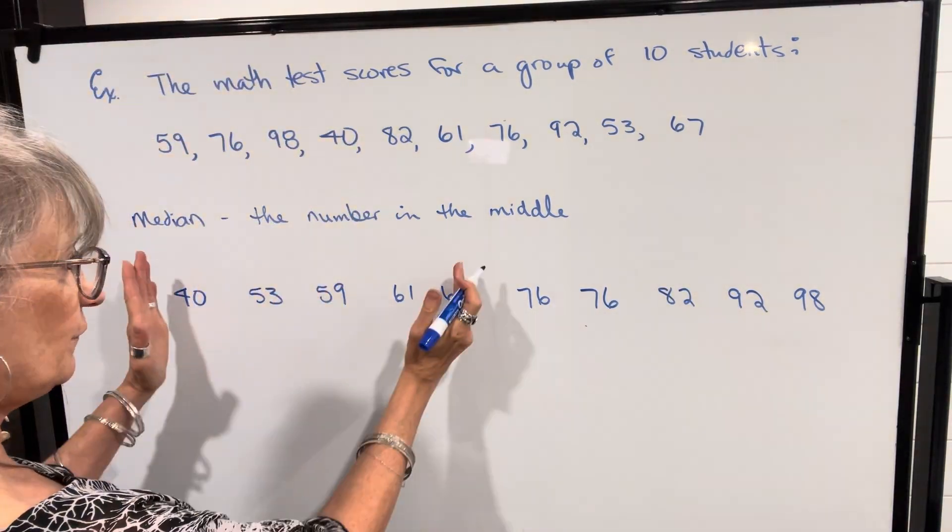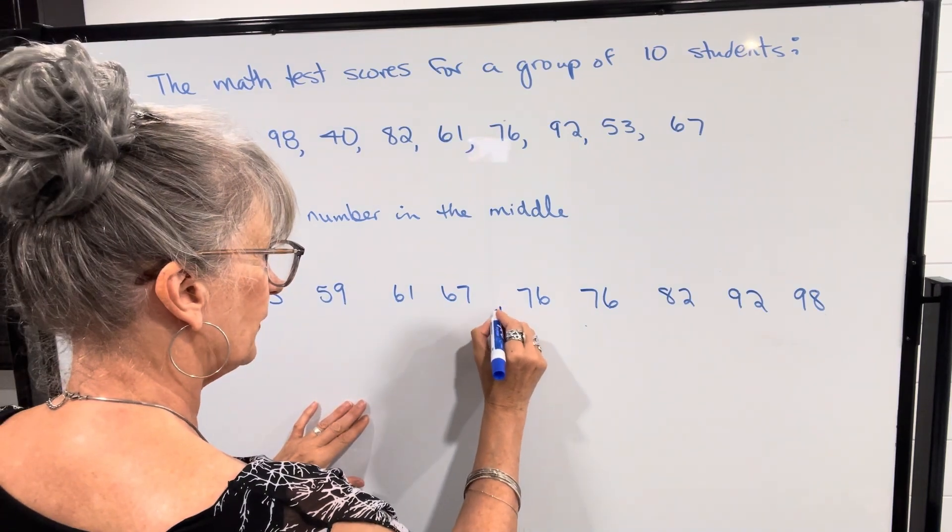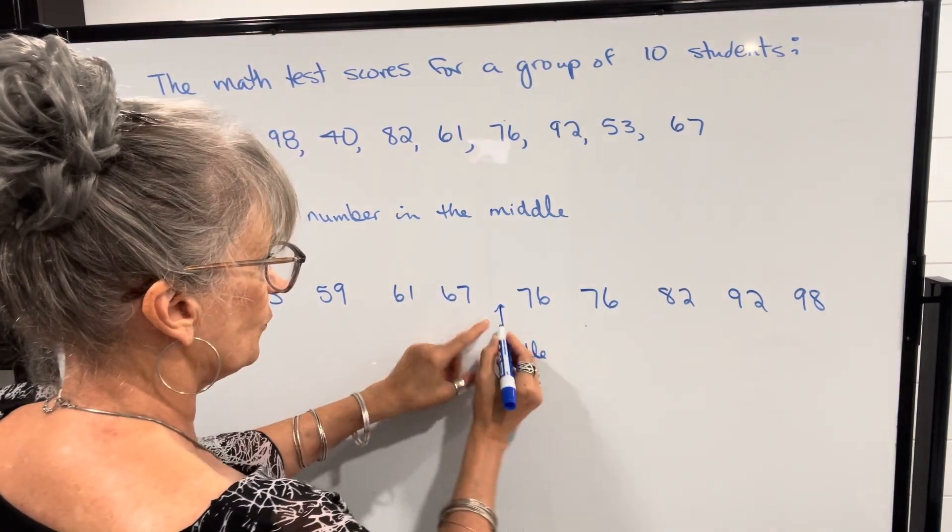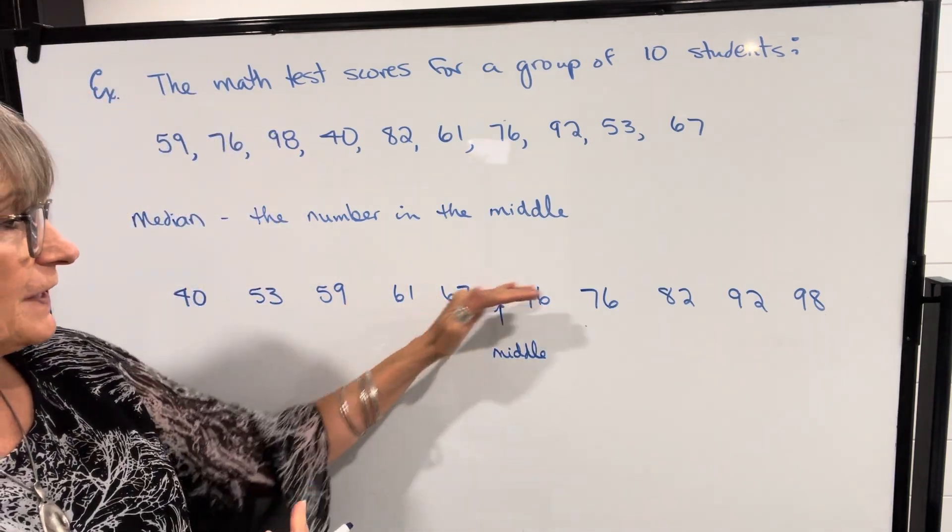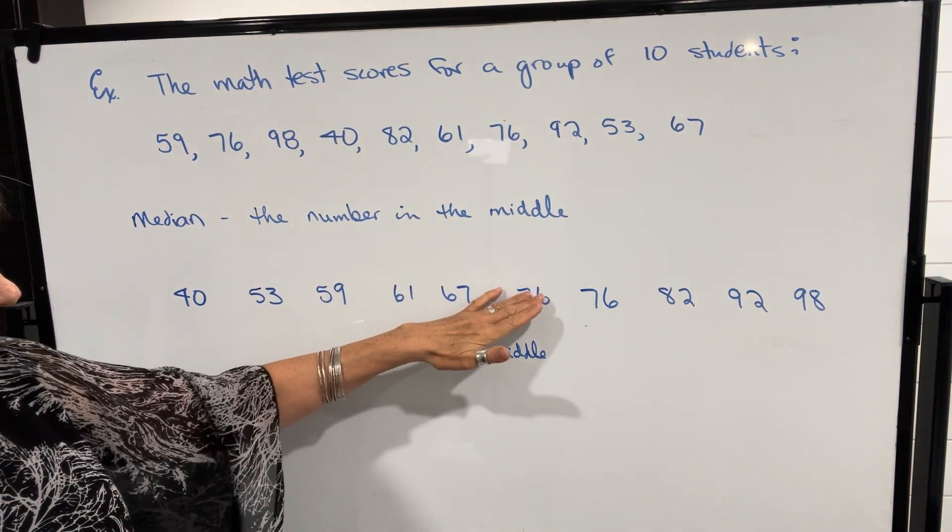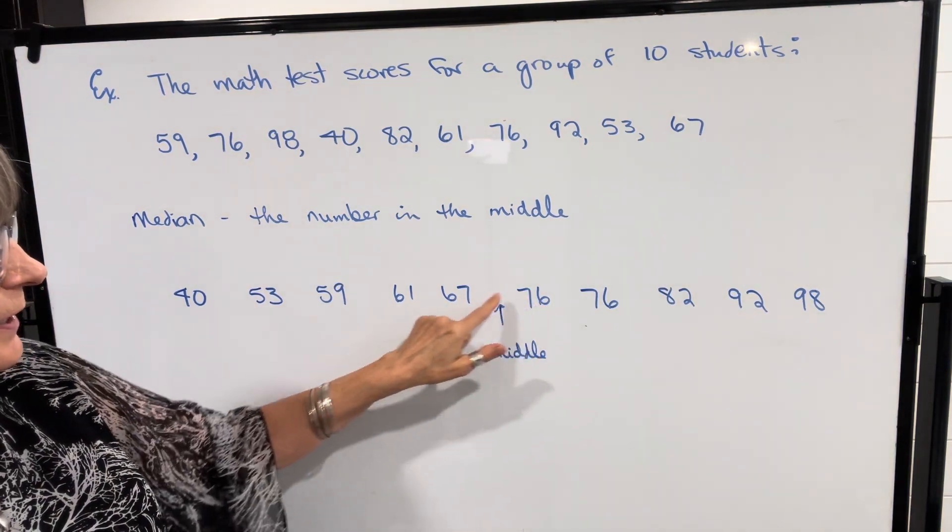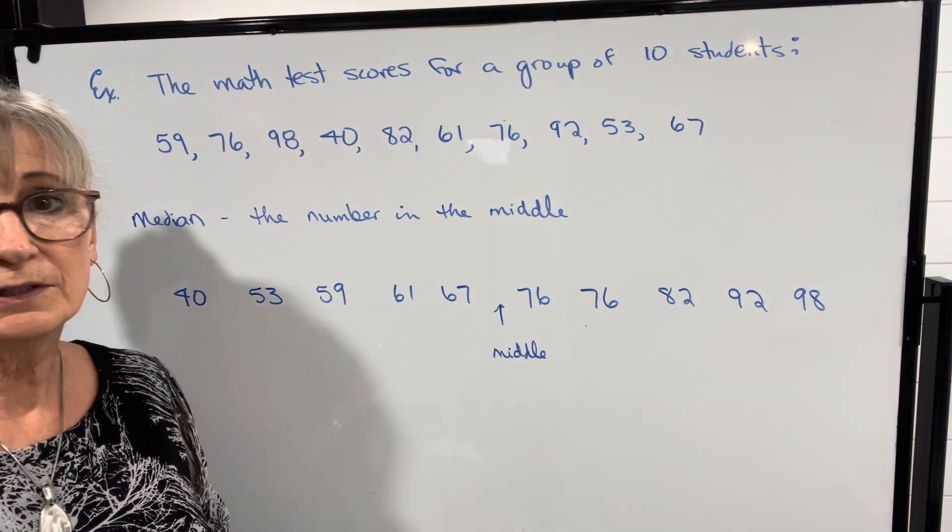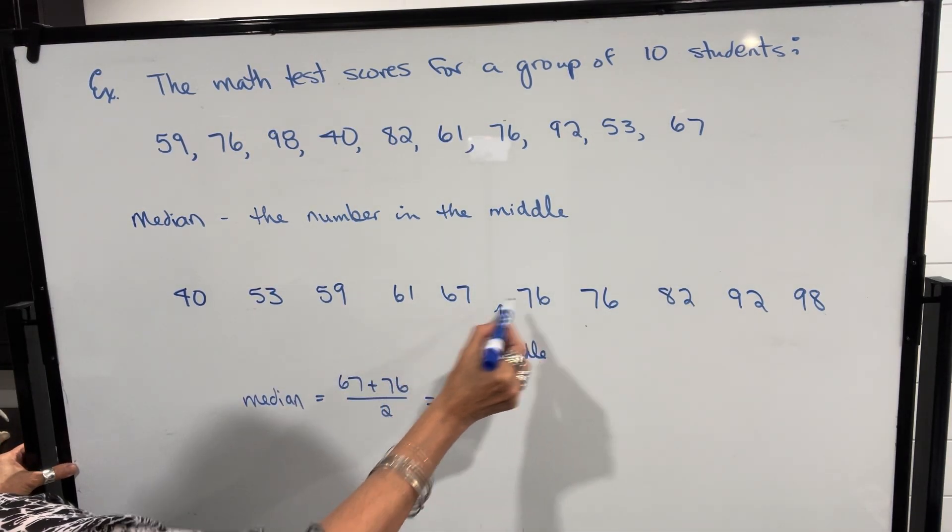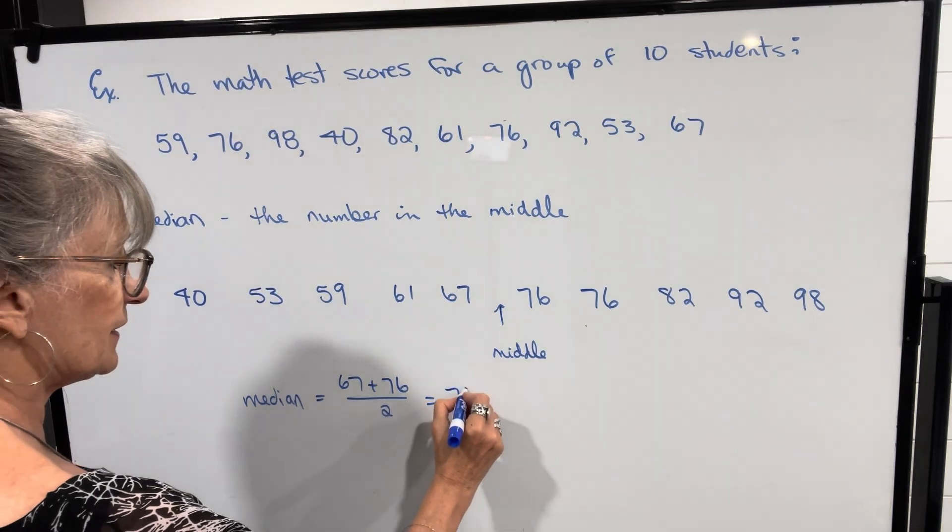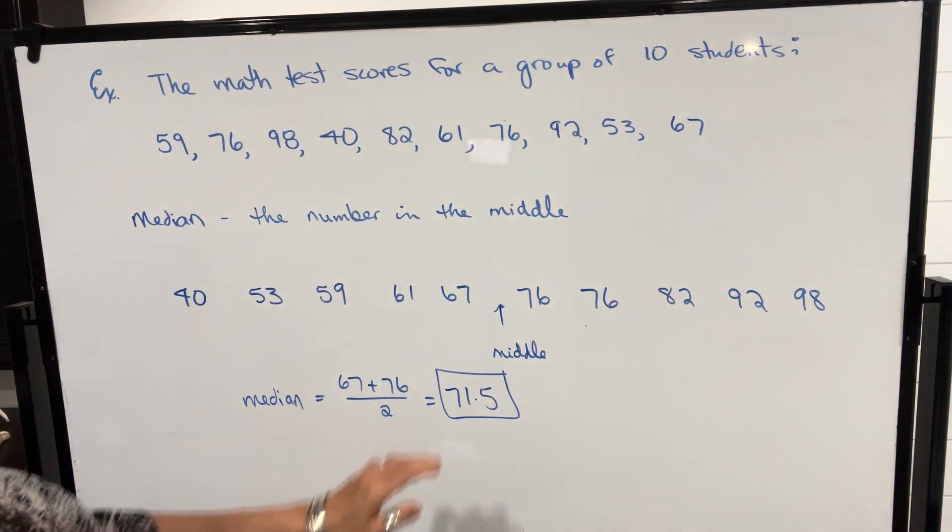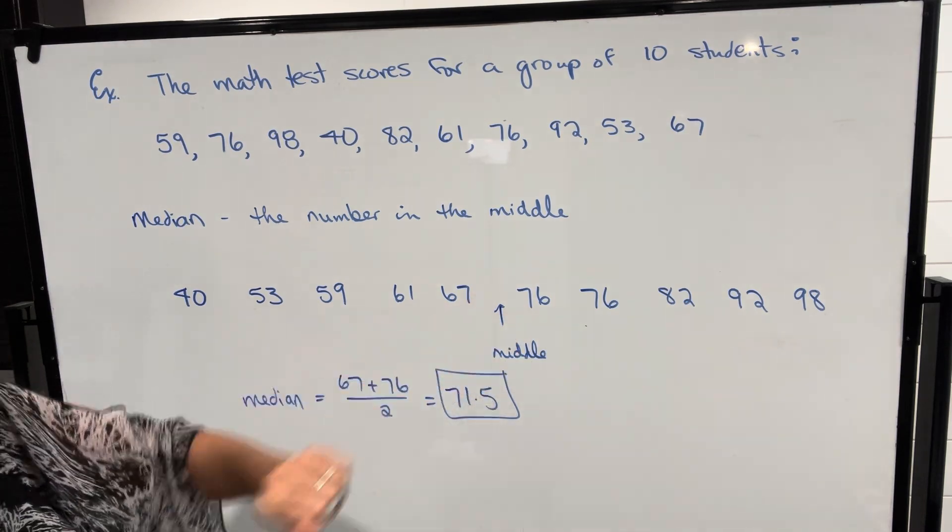Once these numbers are arranged in increasing order, there's five numbers below the middle and five numbers above. So the middle is going to be in between the fifth and the sixth number. In order to find what that number is, we just take the mean or the midpoint of those two numbers. So the median will be 67 plus 76 divided by two, which is 71.5, the middle number or the middle of the two middle numbers.